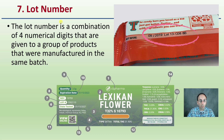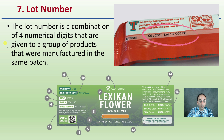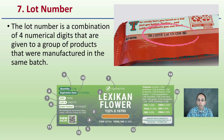Then we have number seven — the lot number. The lot number is a combination of four numeric digits assigned to a group of products that were manufactured in the same batch. Different batches get different lot numbers, and lot numbers aren't unique to cannabis — you can also find them on everyday packaging like a candy bar.